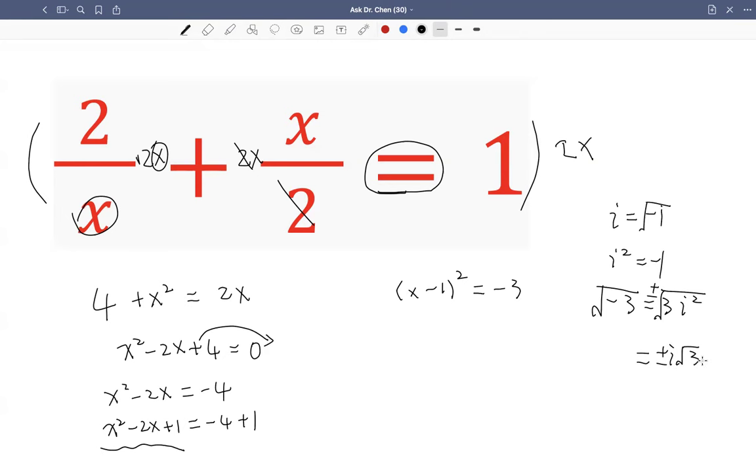Because if we write i in the back, we don't know if it's under the radical sign or not under the radical sign. It could be confusing. So we write i in front of the radical 3.